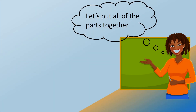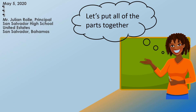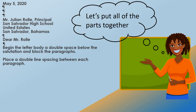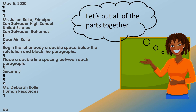Let's put all of the parts together. First you have the date, then quadruple spacing, inside address, double spacing, salutation, double space, the body typed in single line spacing with a double space between paragraphs, a double space after the body, followed by the complimentary close, a quadruple space, followed by the writer's name and position section, double space, and the last part, the typist initials.